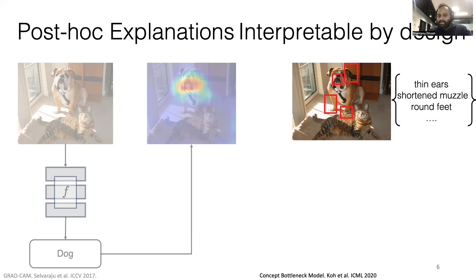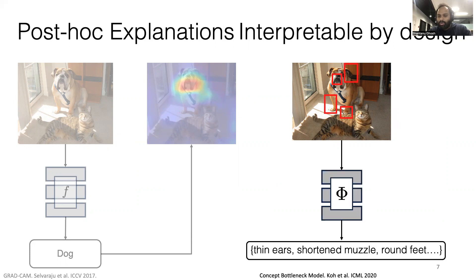Here in this case, these are some of the important concepts useful to predict a dog. Concept bottleneck models use a concept predictor to predict the concept from an image, and then the class label from the predicted concepts.